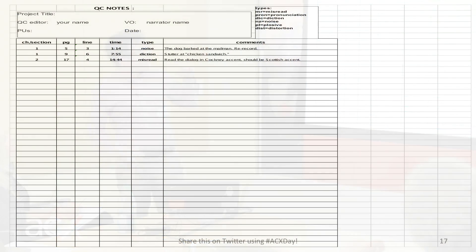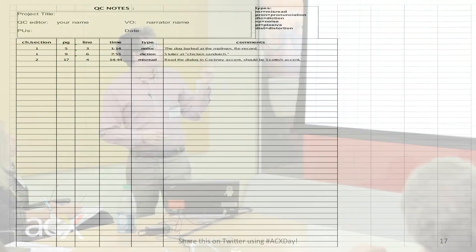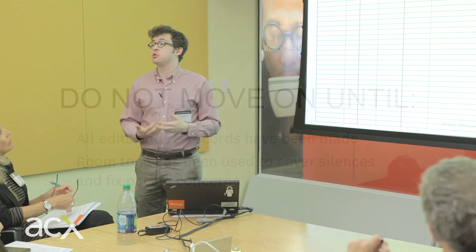I obviously did a great job narrating this book because I only have three issues. Generally, what we're showing here is the section where it happened, the page, the line number, and the time in the audio recording where the issue exists. I also like to write down what type of error it is for reference, and include a bit of context — for example, if I need to rerecord the words 'chicken sandwich,' I'll quote that so I know exactly what to fix. If I read the wrong dialogue or the wrong accent, I'll note the accent I should have used instead.